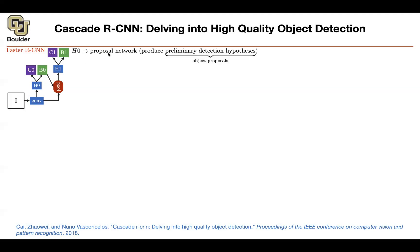So H0 is your proposal network. It's going to produce object proposals. H1 is the region of interest subnetwork, which is just a fully connected network, or you can actually remove the fully connected and go fully convolutional with the type of convolutions that are sensitive to location. We saw these ideas. The C is the classification head, and B is a bounding box regression head.